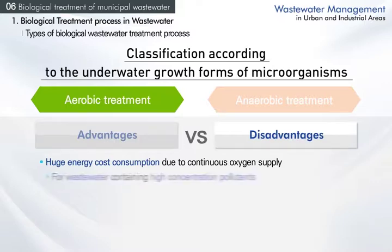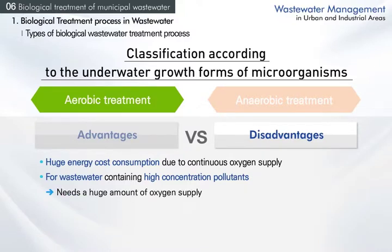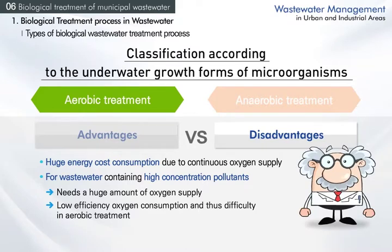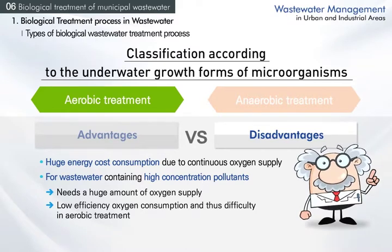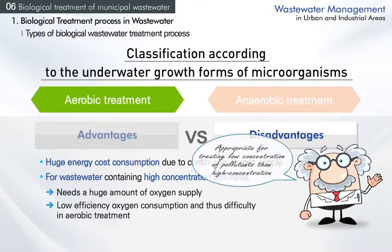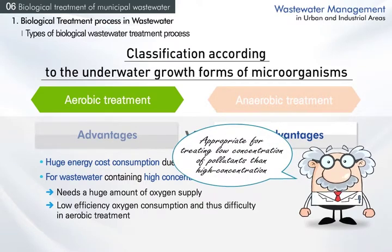Wastewater containing a high concentration of pollutants, such as industrial or livestock wastewater, needs a huge supply of oxygen and has low efficiency of oxygen consumption, making aerobic treatment difficult. Therefore, aerobic treatment is applied to municipal wastewater treatment that contains a low concentration of pollutants.